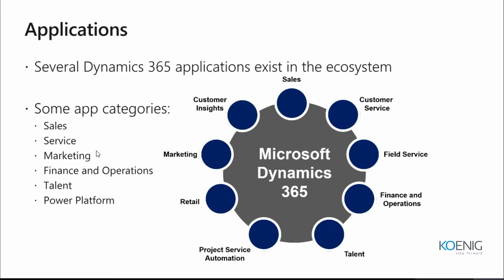Lesson number one covers the ecosystem and main components - the different applications inside your D365 ecosystem. You've got Sales, Customer Service, Field Service, Finance and Operations, Talent, Project Service, Retail, Marketing, Customer Insights, and more. Broadly, you can classify these as sales-related, services-related, and marketing-related applications.